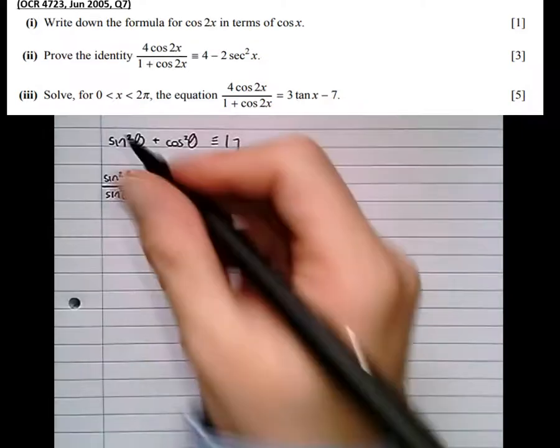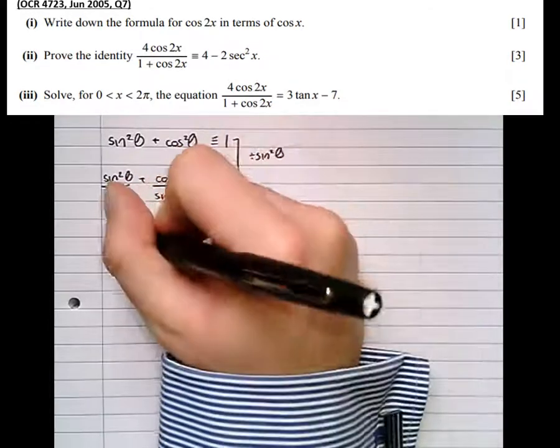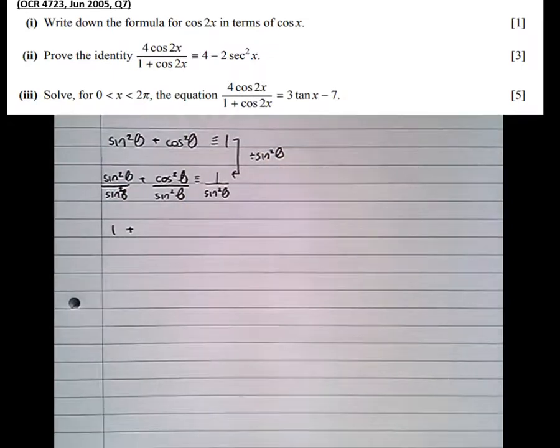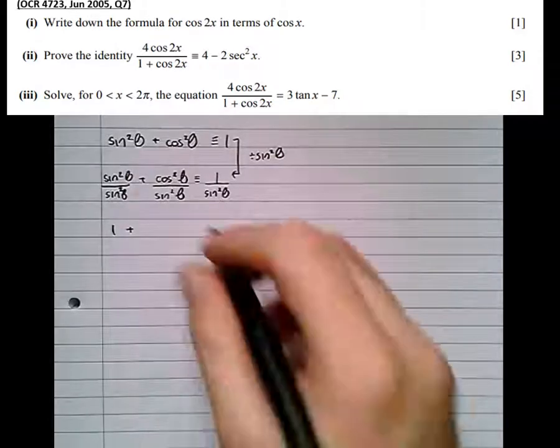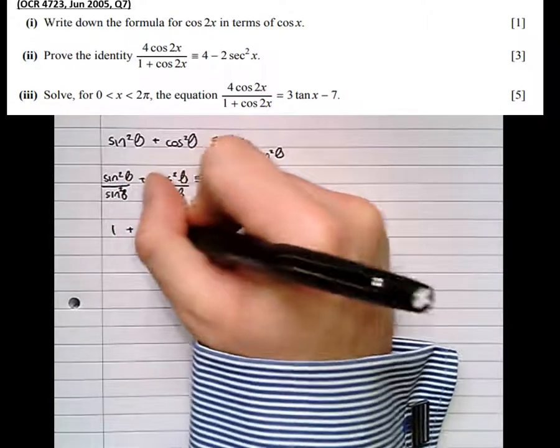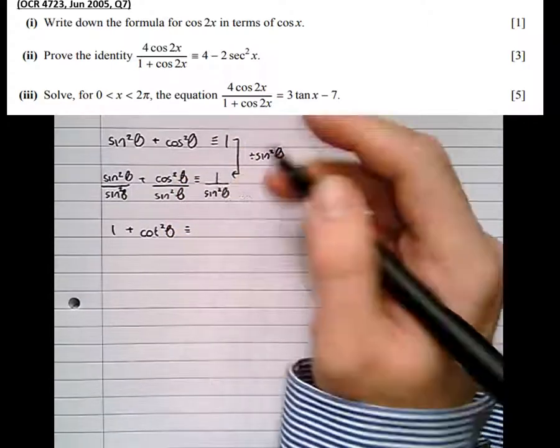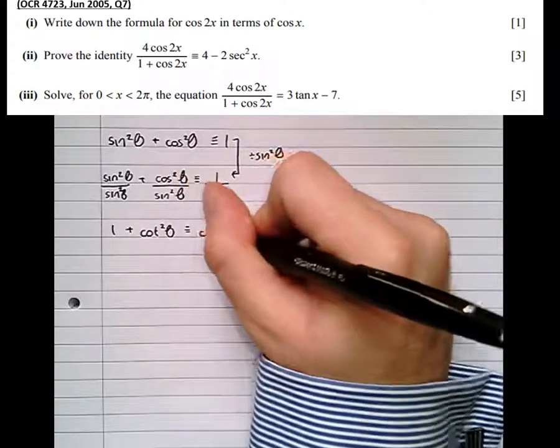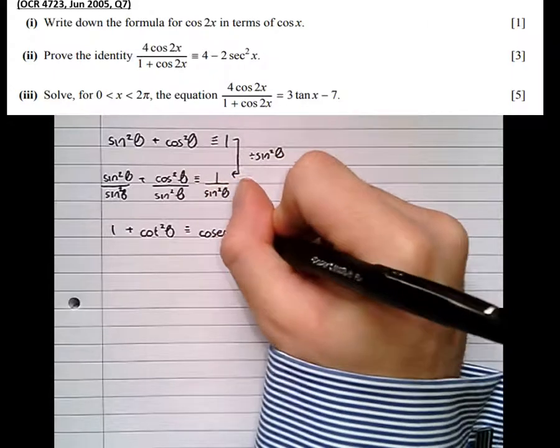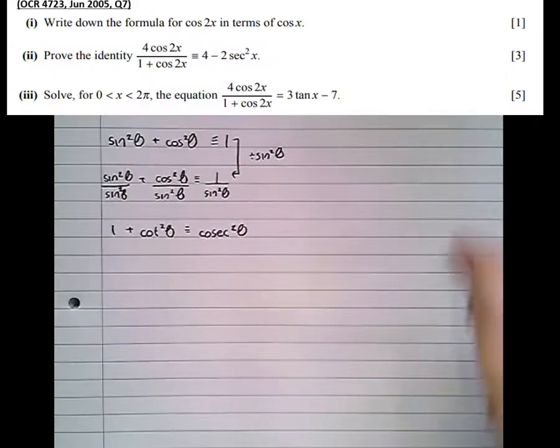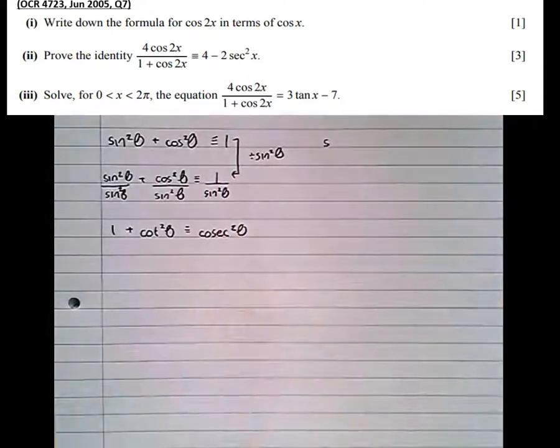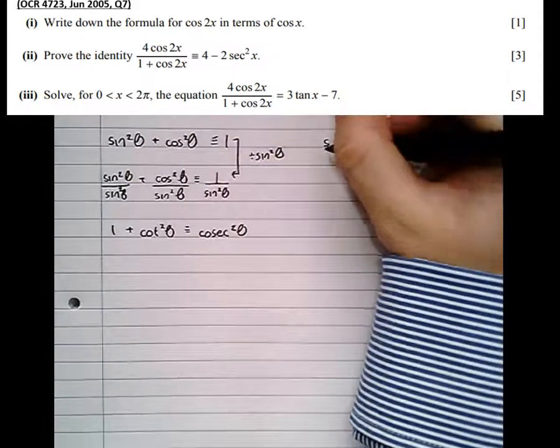So tidying this up a bit, that clearly becomes 1 plus, well, sine over cos is tan, so cos over sine must be cot. So cos squared over sine squared must be cot squared theta is identical to, well, 1 over sine is cosec, so 1 over sine squared is cosec squared theta. So we've got another trig identity there, 1 plus cot squared theta is identical to cosec squared theta.